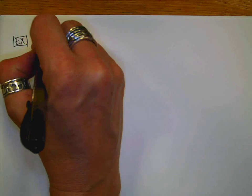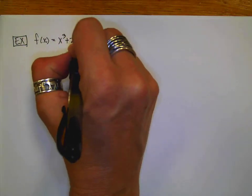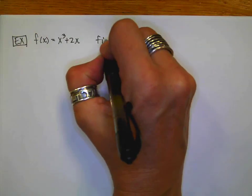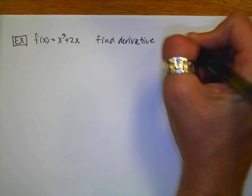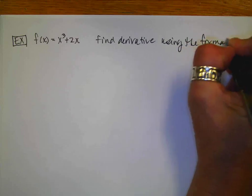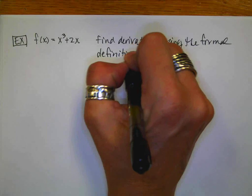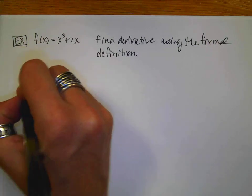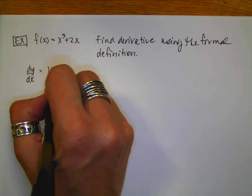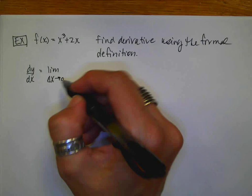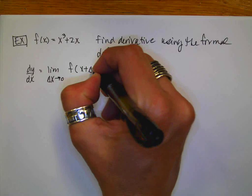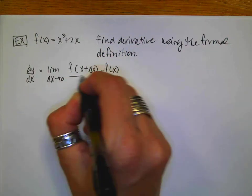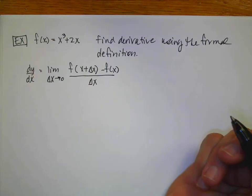Now let's do the example. The function is f(x) = x³ + 2x, and I want you to find the derivative using the formal definition - also called the limit definition of a derivative. Remember that my derivative dy/dx is going to be the limit as delta x approaches zero of f(x + delta x) minus the original f(x), the change in y, over the change in x.